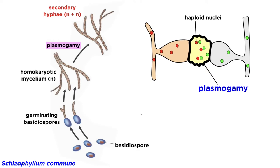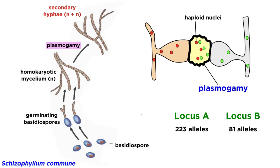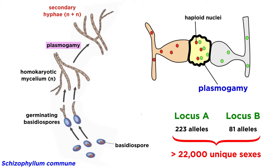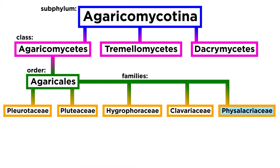As discussed in the tutorial on the Basidiomycete life cycle, fungi sexually reproduce via the fusion of hyphae. This fusion, called plasmagamy, depends on genetic differences at two genetic loci, locus A and locus B. Schizophilum commune is unique because the fungus has 223 alleles at locus A and 81 alleles at locus B. If there is a single difference between any of these alleles, the two fungal individuals will be able to mate sexually. With all of these potential matches, mycologists have defined the number of unique sexes to be over 22,000 in Schizophilum commune.